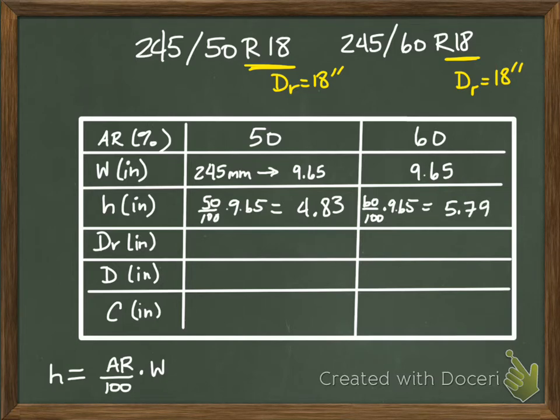The rim diameter is the same on both, that's 18. The diameter of the tire is the diameter of the rim plus two times the height. In this case it gives me 27.66 inches. On the other one, the diameter plus two times the height gives me 29.58 inches.